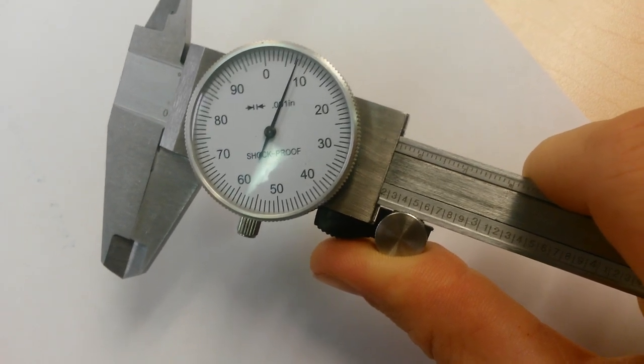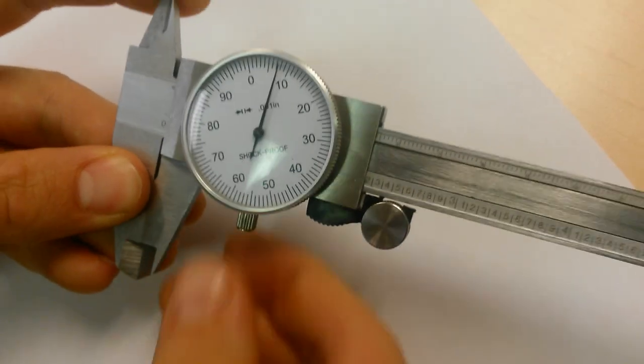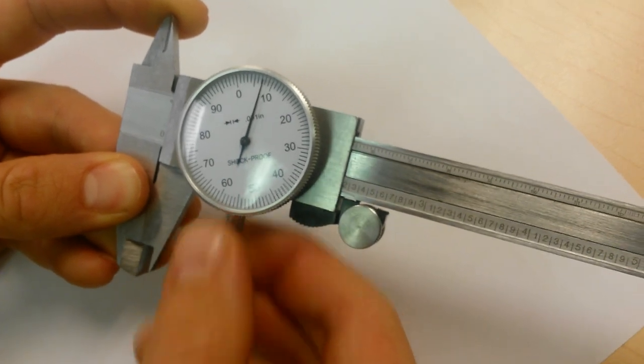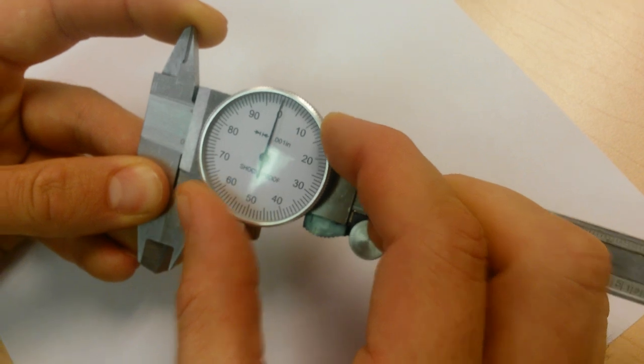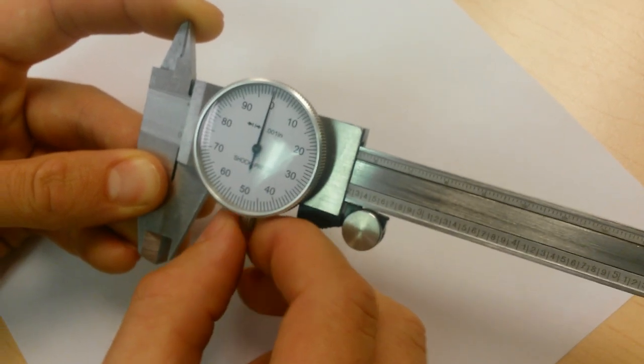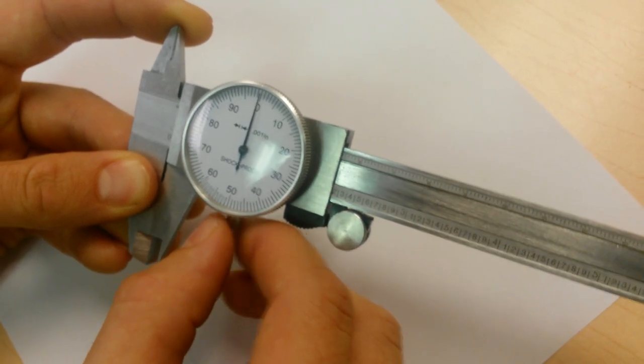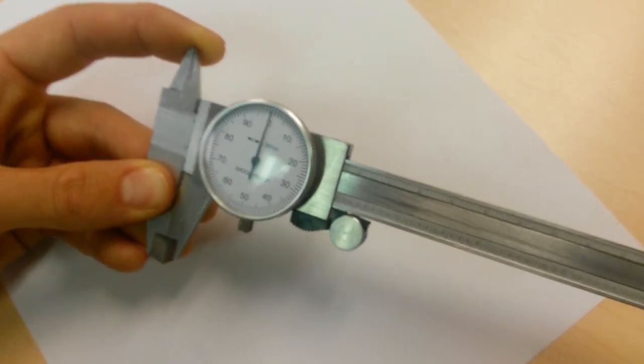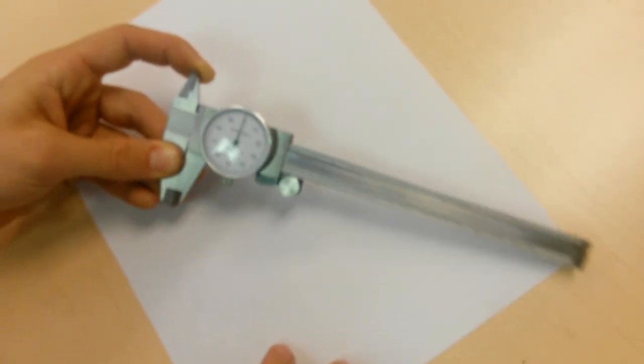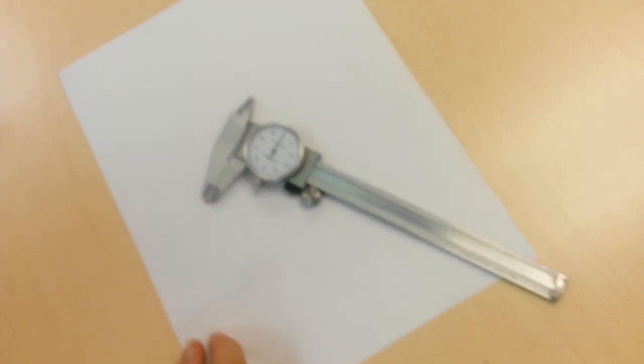So what I'm going to do to zero it out and get the reading right is I'm just going to loosen this screw right here. Then I'm going to twist the dial till it's exactly at zero and then I'm going to tighten it up again. Now there's no need to go real tight, prove how strong you are. You can just kind of gently tighten it so that it won't easily rotate. So now your dial caliper is zeroed out and it's ready to measure.